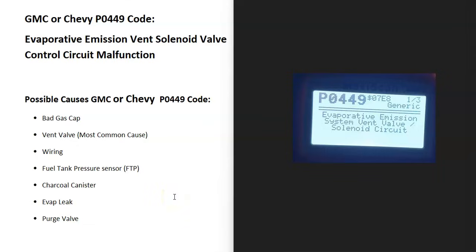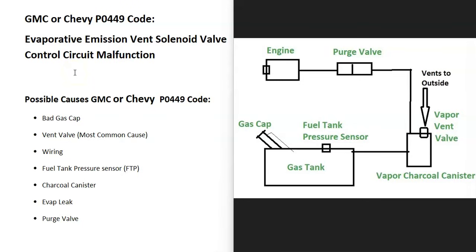Today I'm talking about a GMC or Chevy P0449 code — what it is and how you go about fixing it. A P0449 is an evaporative emission vent solenoid valve control circuit malfunction. Modern vehicles have an EVAP system that takes gas vapors from the gas tank and feeds them back up to the engine to get burnt off, so they don't escape into the atmosphere. This is for emissions, and the onboard computer is seeing a problem inside of this system.